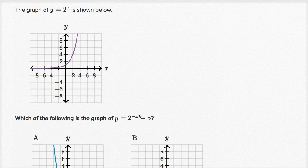So there's two changes here. Instead of two to the x, we have two to the negative x, and then we're not leaving that alone, we then subtract five. So let's take them step by step.